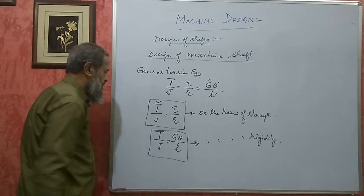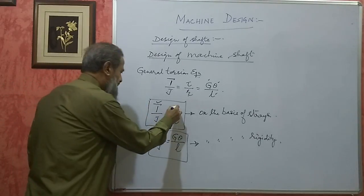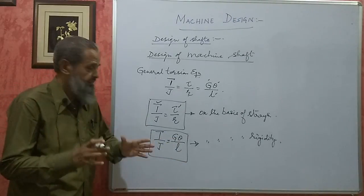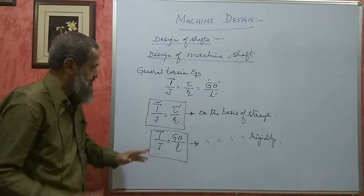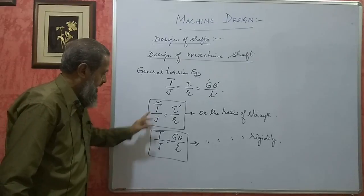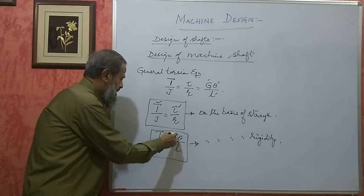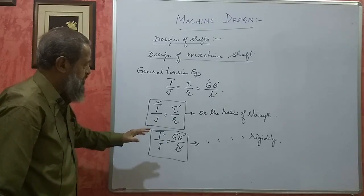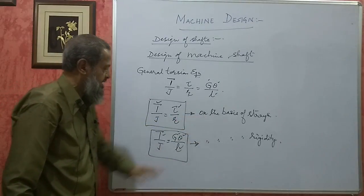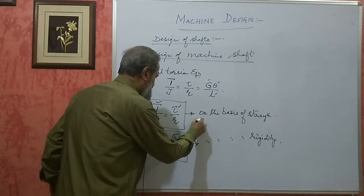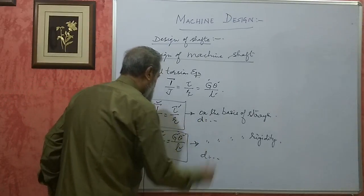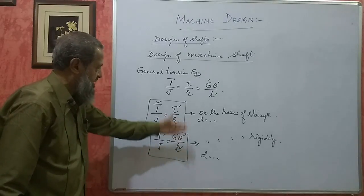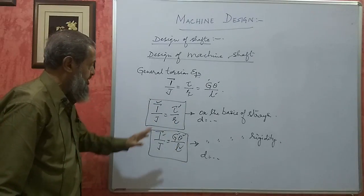If T and τ are given but G, θ, and L are not given, then we design only on the basis of strength. If T, τ, G, θ, and L are all given, then we design on both strength and rigidity basis. We get two values of D — one from each — and we must adopt the higher of the two values as the design diameter of the shaft.